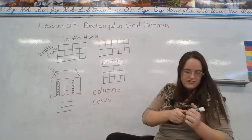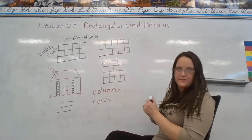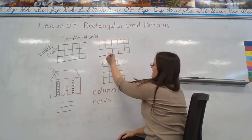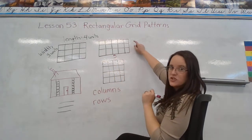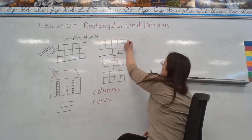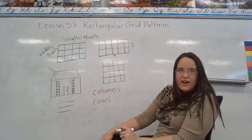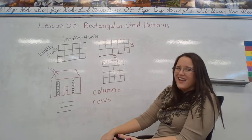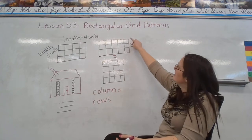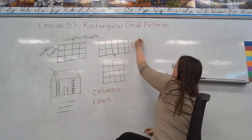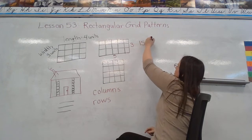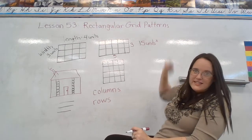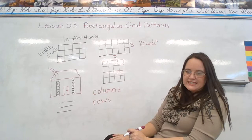So let's switch colors here. For this one, my length is the longer side. So I have one, two, three, four, five units. My width is the shorter side. So I have one, two, three units. And I have to figure out how many small squares are inside that picture. Do I want to count by fives or threes? I think fives. So five, ten, fifteen. There are fifteen square units. We put this little two up there to show that it's a square unit. And we'll talk more about that in later lessons. Okay?